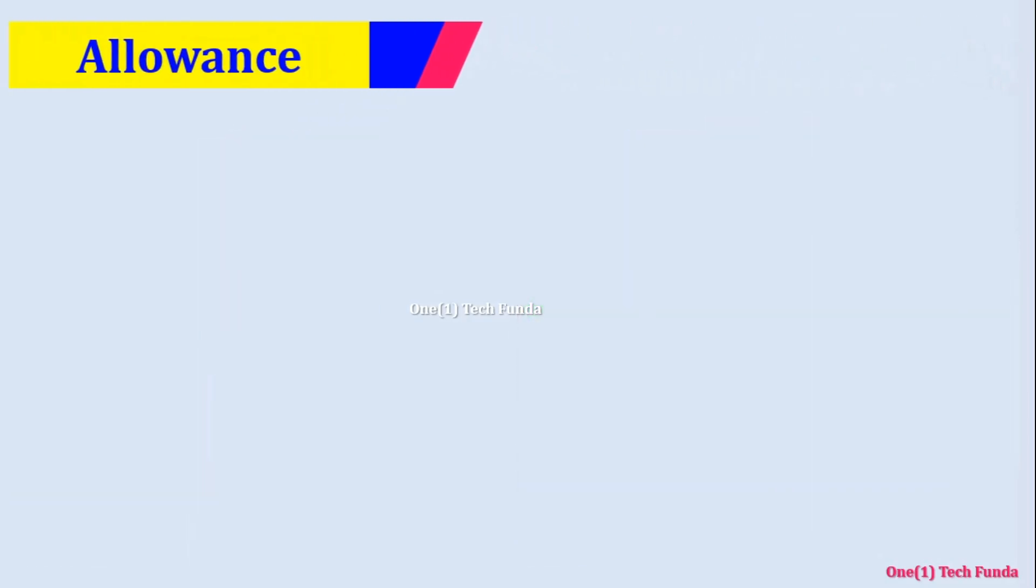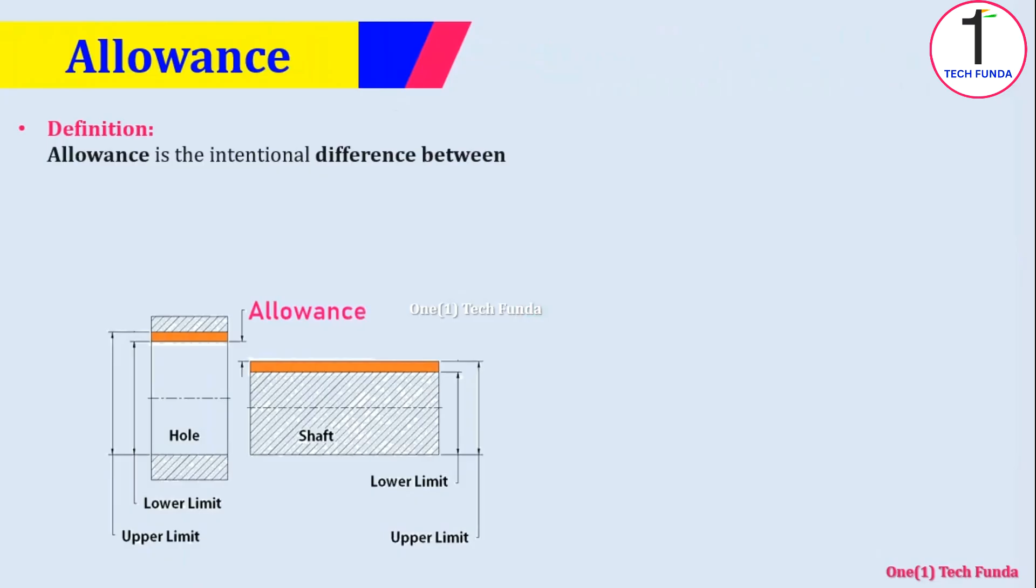What is allowance? Allowance is the intentional difference between two mating parts to control the type of fit, function, and ease of assembly.